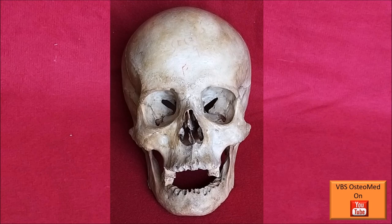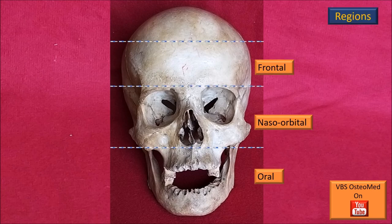When you look at the front of the skull, that's Norma Frontalis. We can divide this into three regions: upper, middle, and lower. We could also call them the upper or frontal region, middle or naso-orbital region, and lower or oral region — three regions of the Norma Frontalis.